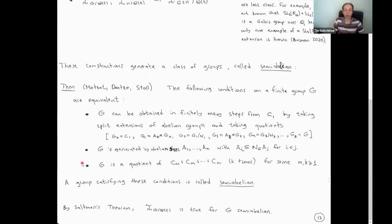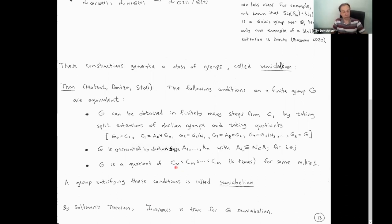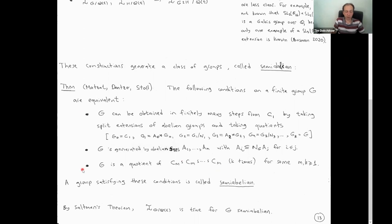Another characterization, due to Mikkel Stoll, is that G is a quotient of an iterated wreath product of a cyclic group CM with itself. It's a very neat compact way of writing such a class. In particular, proving this theorem by avoiding Saltman — which is what he also did — it's quite easy to realize cyclic group CM, and then you can also prove that you can realize these wreath products. By doing it repeatedly and taking quotients, you can construct, at least in theory, all groups like this. A group satisfying these equivalent conditions is called semi-abelian, and for these groups we do know the inverse Galois problem.